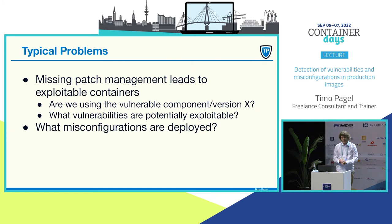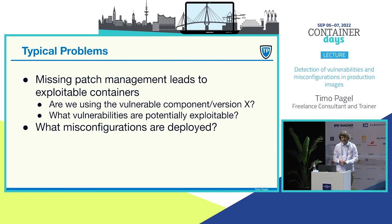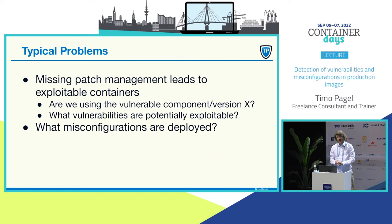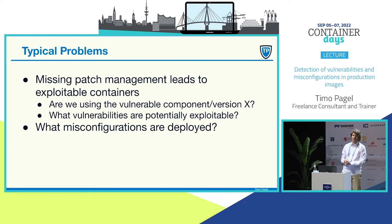A typical problem when you're using a production cluster with images like Kubernetes is that you have missing patch management, and that leads to exploitable containers. In addition, you might have misconfigurations in your containers, something like the container running as root when it doesn't need to do that.